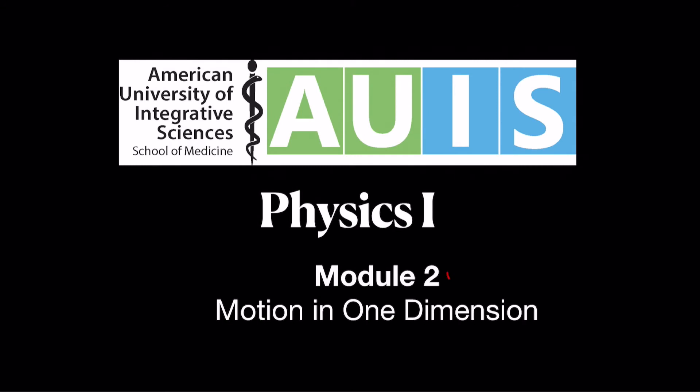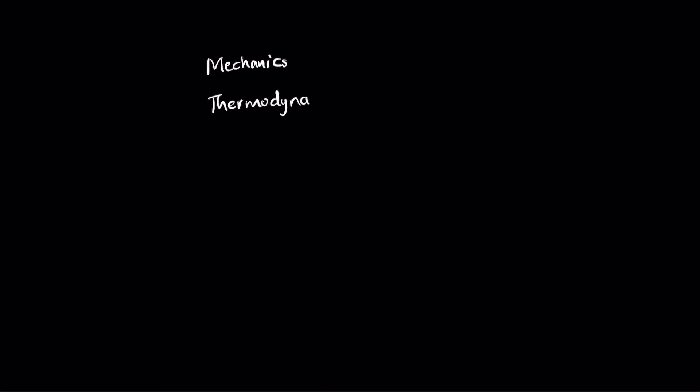Hello everyone, welcome to Module 2. In Module 2 we will talk about motion in one dimension. In Physics 1 we are going to discuss three parts of physics: mechanics, thermodynamics, and vibration and waves. Mechanics will cover about 8 chapters, thermodynamics about 3 or 4 chapters, and vibration and waves 2 chapters.